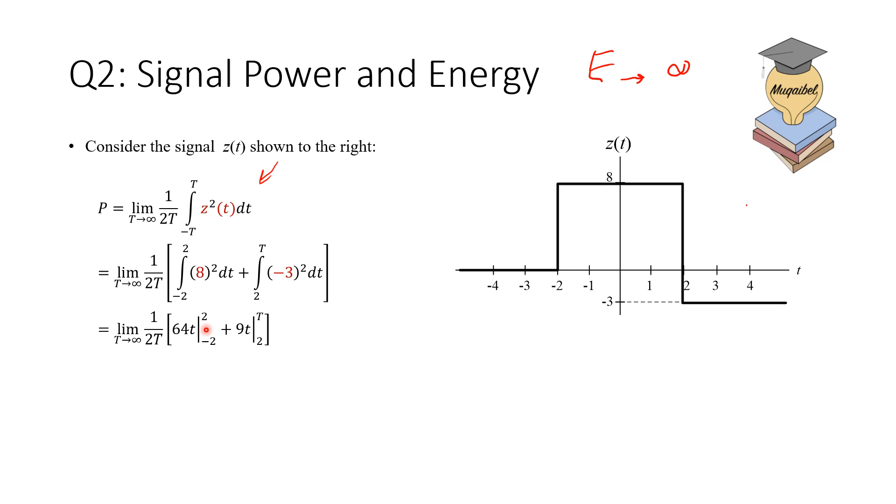Substitute into the integration limit. Remember, not to forget the minus sign. So we have 2 minus minus 2, which becomes plus, and then similarly here with T minus 2. If we simplify here, then remember that everything is divided by T. And when we divide by T, all constants are going to disappear because T is going to infinity.